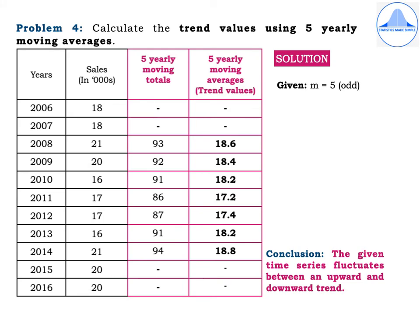Problem 4: Calculate the trend values using five-yearly moving averages. The years are 2006 to 2016, and sales in thousands are: 18, 18, 21, 20, 16, 17, 17, 16, 21, 20, 20. Write solution: given m = 5, which is odd. Form two columns: five-yearly moving totals and five-yearly moving averages. Add the first five values: 18 + 18 + 21 + 20 + 16 = 93, written against middle year 2008. Continuing, the remaining totals are: 92, 91, 86, 87, 91, 94, and the last two are missing.